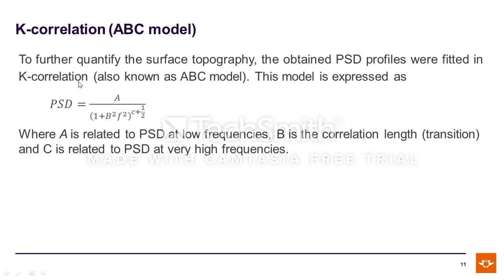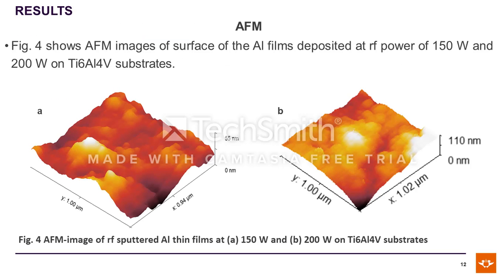The k-correlation model used in this case assumes that the power spectral density can be written as a function where: A is related to the power density at low frequencies, B is the correlation length, and C is the parameter describing the transition between high and low frequencies.